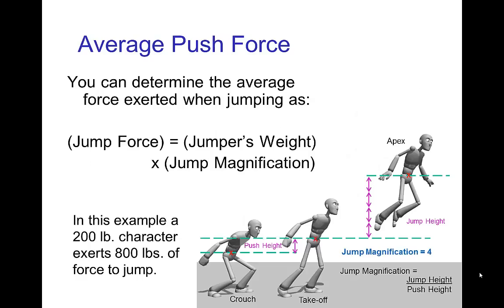The average amount of force that you exert on the ground is found from the jump magnification. Just to remind you, the jump magnification is the ratio of how high you jump to how far you push from crouch to takeoff. So in this example, the jump magnification is four — we jump four times higher than we push. If the character's weight is two hundred pounds, then the amount of force that they exert on the ground to do this big jump would be eight hundred pounds.